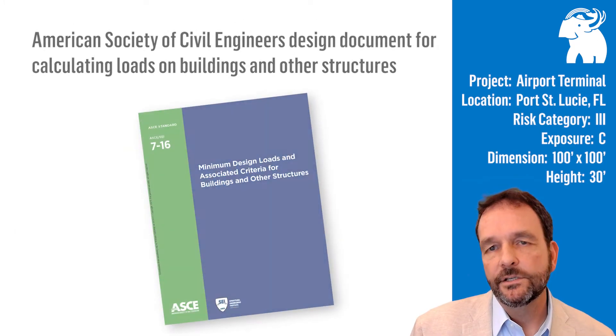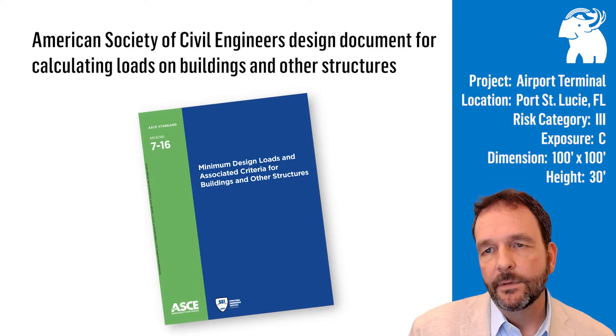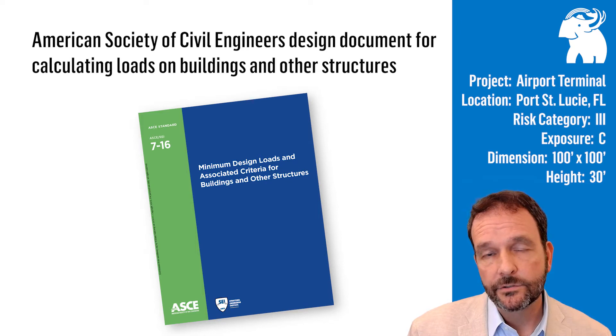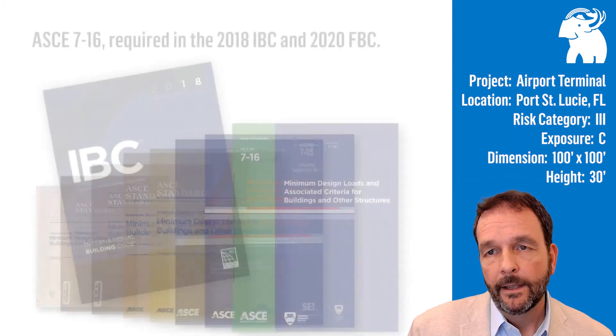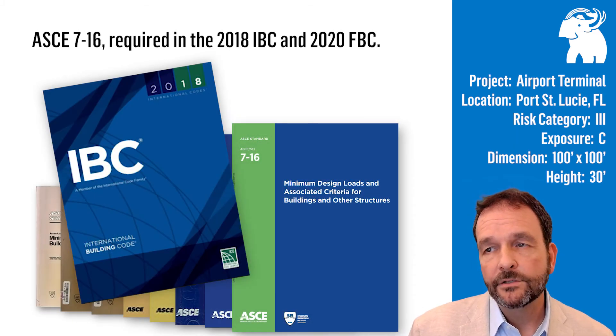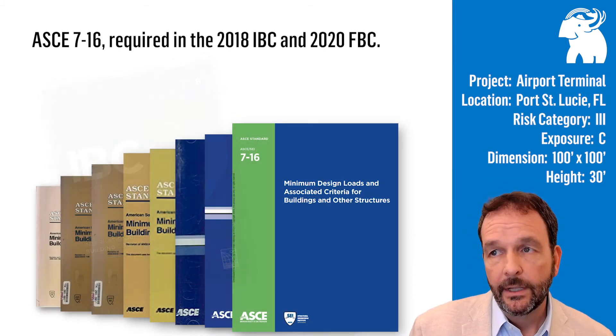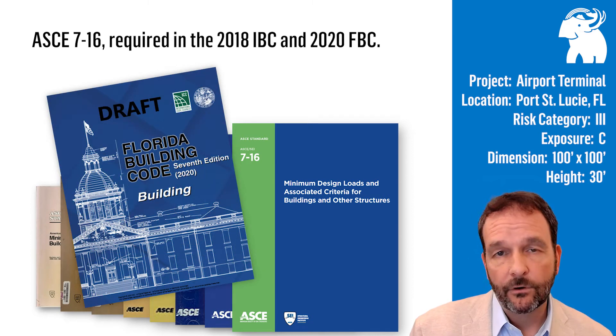First, what is ASCE 7? ASCE 7 is the American Society of Civil Engineers' design document for calculating environmental loads on buildings and other structures. This includes calculating low-slope roofing wind design. ASCE 7 is required in the 2018 International Building Code and also the 2020 Florida Building Code.